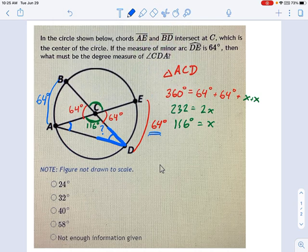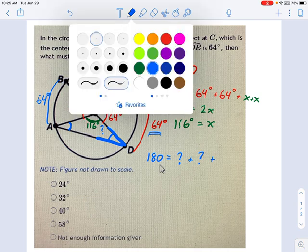Let's use that idea and say this. 180 degrees is the total measure of the angles of a triangle. That equals this angle that I've drawn as a question mark plus an angle that's equal to it on the opposite side of the triangle plus 116 degrees.